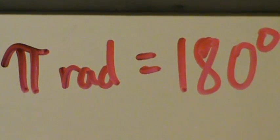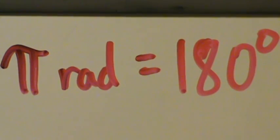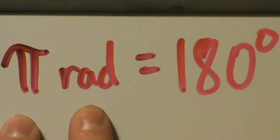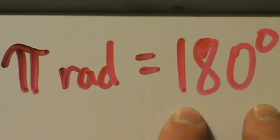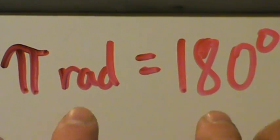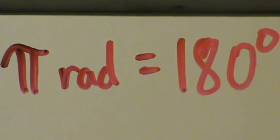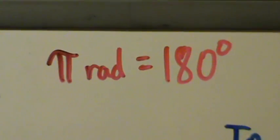In the last video we talked about degrees and radians — we defined them, talked about what they are, and discovered that pi radians equals 180 degrees. So this is what you can use if you want to convert between them. Let's see some examples.